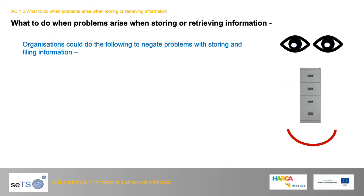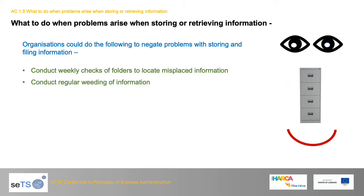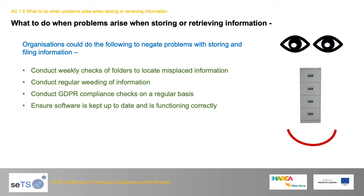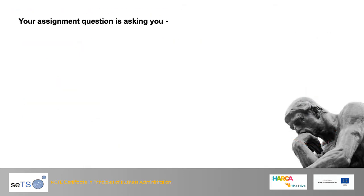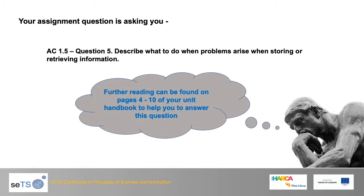Organisations can negate problems with storing and filing information by conducting weekly checks of folders to locate misplaced information, conducting regular weeding of information, performing GDPR compliance checks on a regular basis, ensuring software is kept up to date and functioning correctly, and checking that hardware is working correctly. Assignment Question 5 asks you to describe what to do when problems arise when storing or retrieving information — think back to misfiling, not keeping filing up to date, hardware and software issues, and any others from your own work experience. Further reading can be found on pages 4 to 10 of your unit handbook.